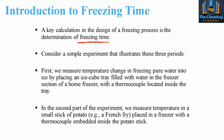If we consider a simple experiment that would illustrate the three periods: we measure the temperature change in the freezing of pure water. It's important that we have pure water — ideally deionized water — so that we have no impurities within the system. We measure the temperature change in order to turn the pure water into ice by placing it in an ice cube tray, say in your home freezer, with a thermocouple located inside.